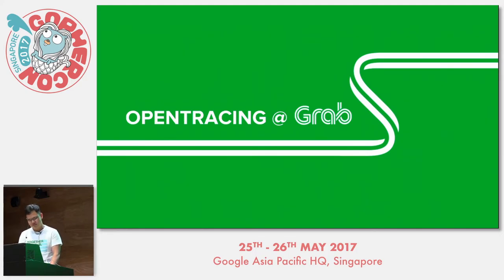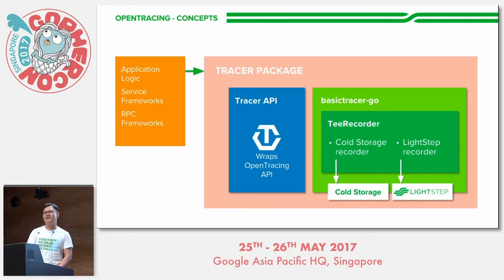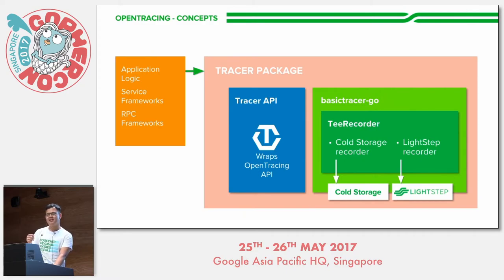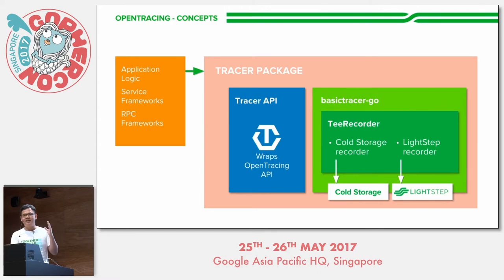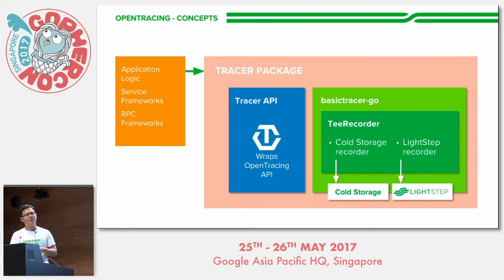How does Grab actually use OpenTracing for distributed tracing? One thing many gophers at Grab believe in is not depending on something we don't have full control over — including the OpenTracing API. So we wrote our own tracer API that wraps the OpenTracing API. The main reason is that if at any point we decide OpenTracing doesn't fulfill our needs, we can extend it easily. For output, we implemented our own tracer that wraps the basic-tracer-go package. basic-tracer-go is an open source tracer implementation that doesn't define an output format but provides a recorder interface.